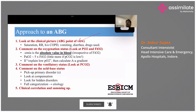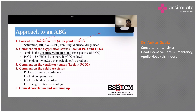In summary: always think about why you ordered an ABG and what action you will take when the report comes. Comment on oxygen and PF ratio, ventilation status, PCO2, and acid-base status with correlation. That covers the key principles of ABG interpretation from an ICU perspective.